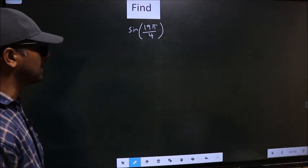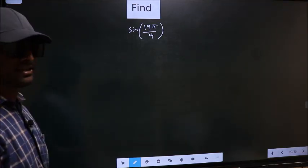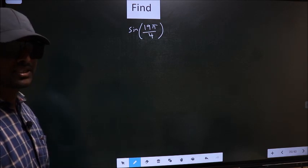Find sin 19π by 4. To find this, we should follow this method.